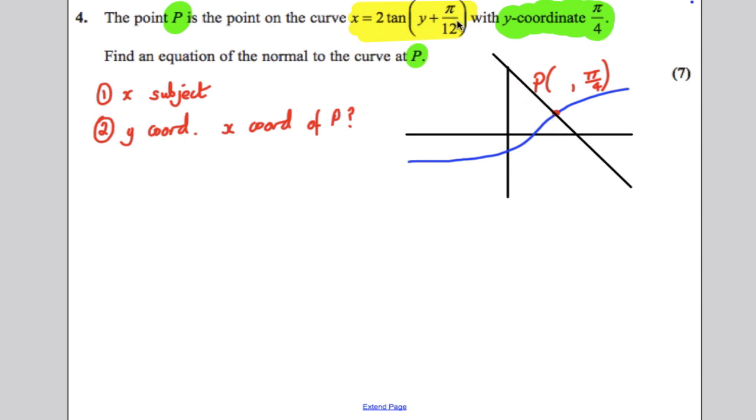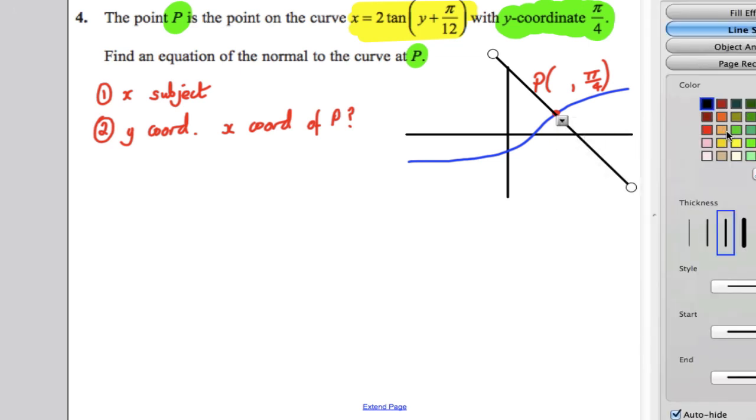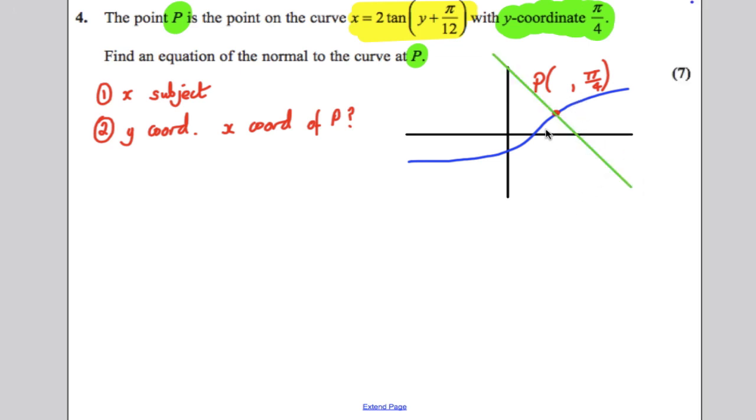So there are two pieces of information we need. We're going to need the x coordinate of P, obviously, and we're going to need the gradient of the normal. And we're going to do that by finding the equation of the tangent first and then using that to find the gradient of the normal.